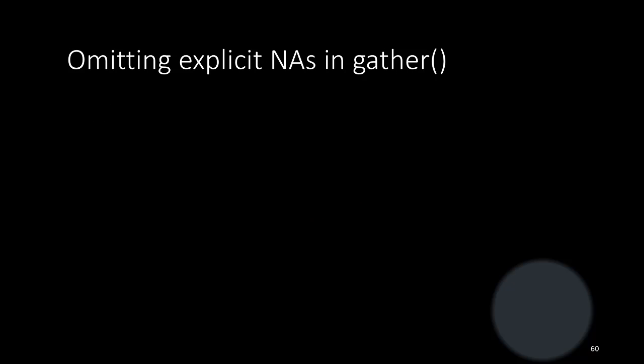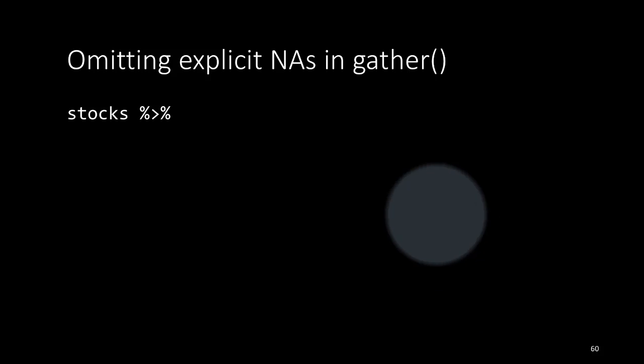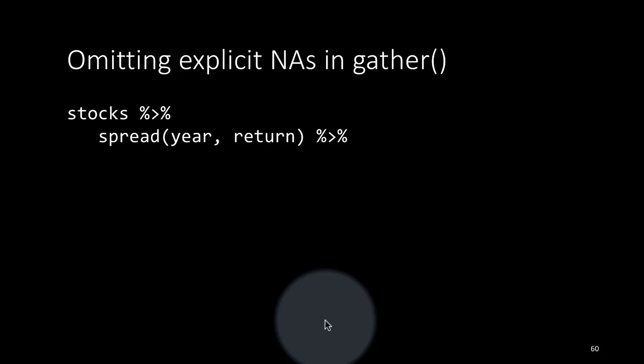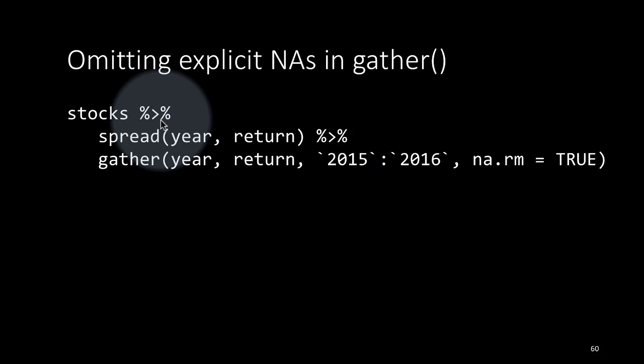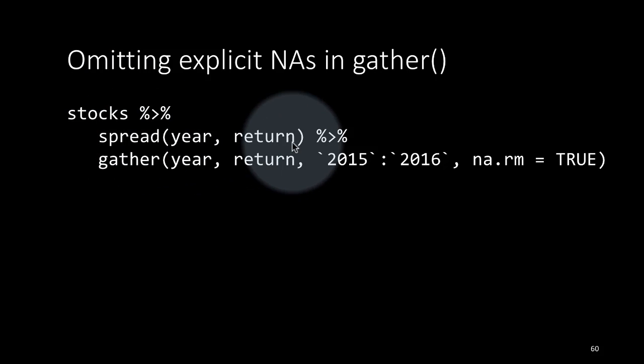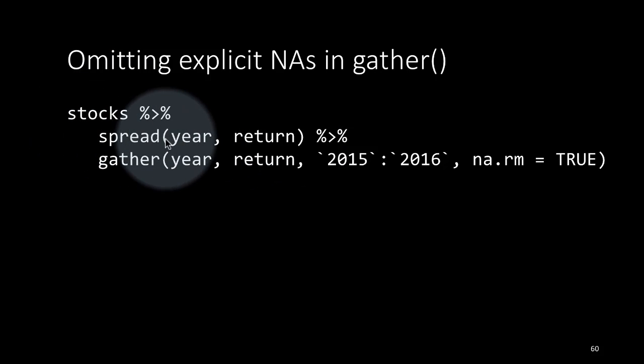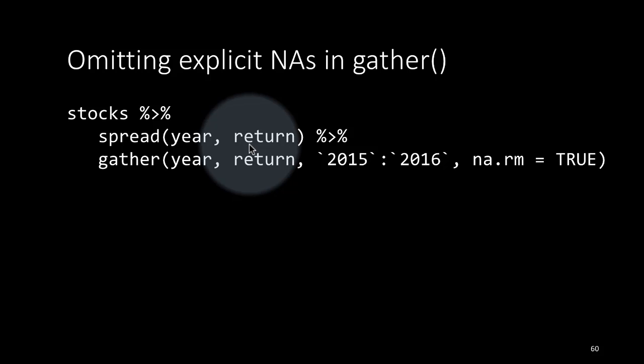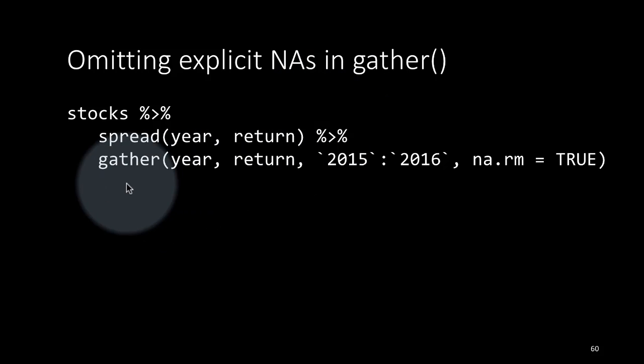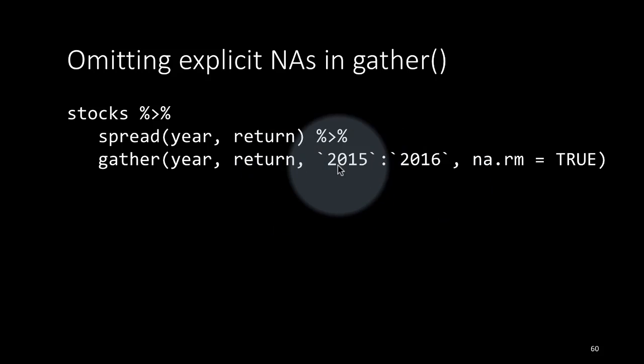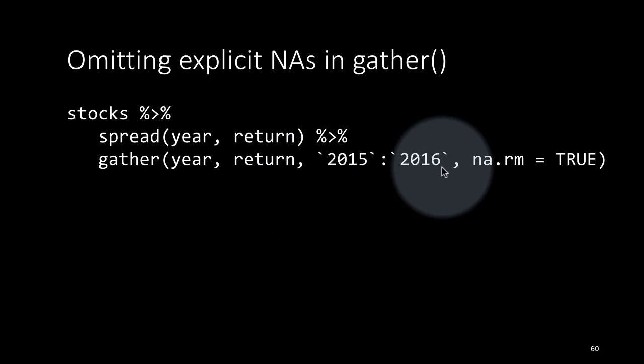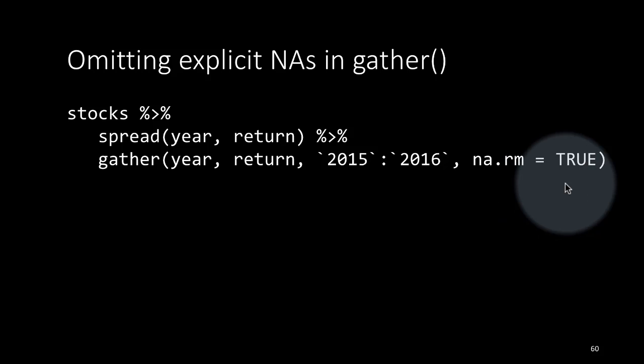If you want to omit the explicit NAs when you apply the gather function, you can do that. Here we say stock spread year return as an illustration. As a result of stock spread year comma return, it's going to create the two missing values for the stock return. Then when we gather it, we can say gather year return 2015 to 2016, the columns, and just say na.rm equals true.